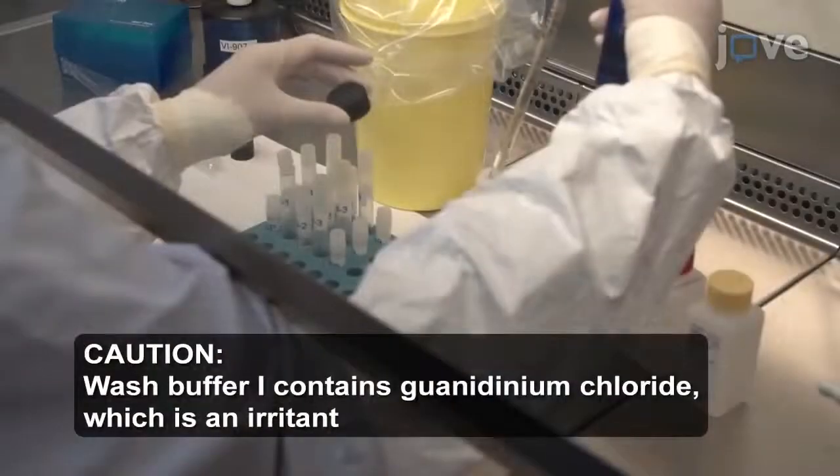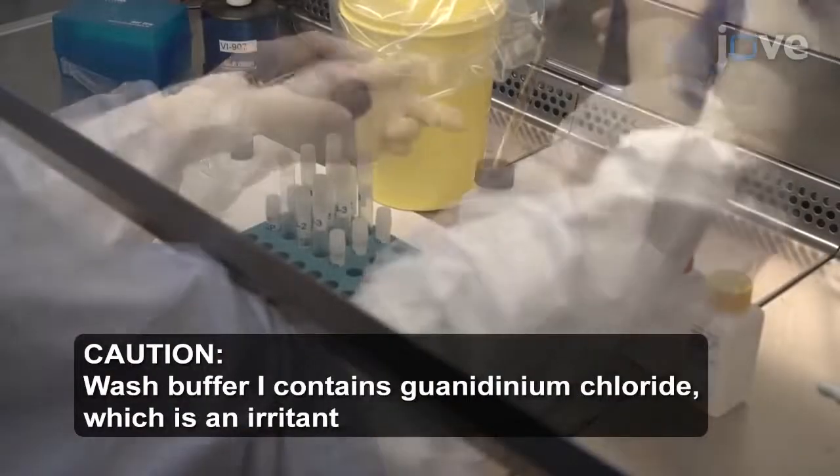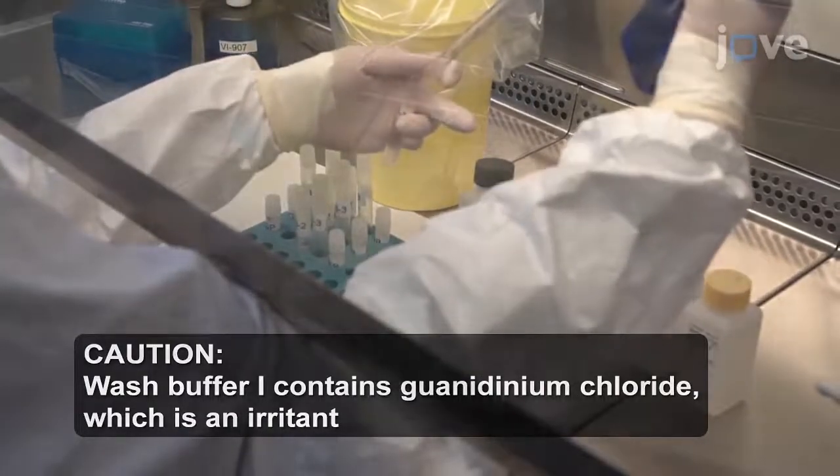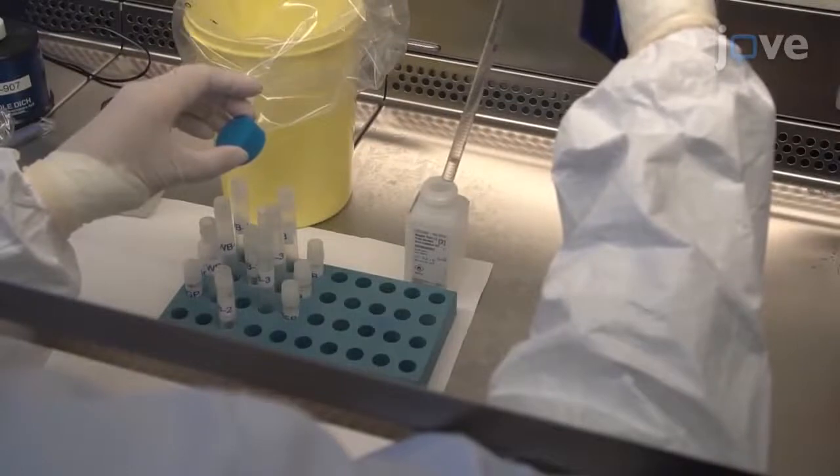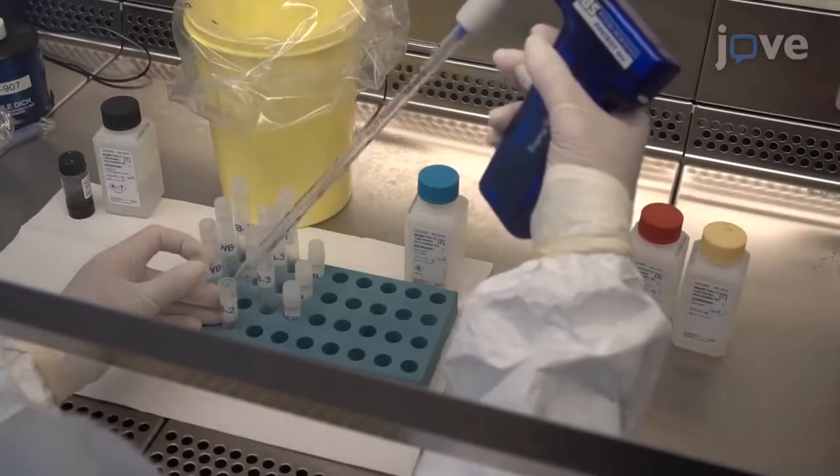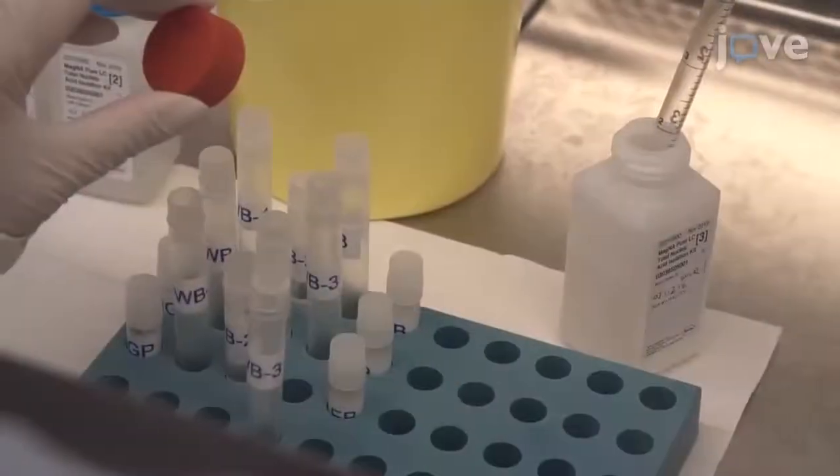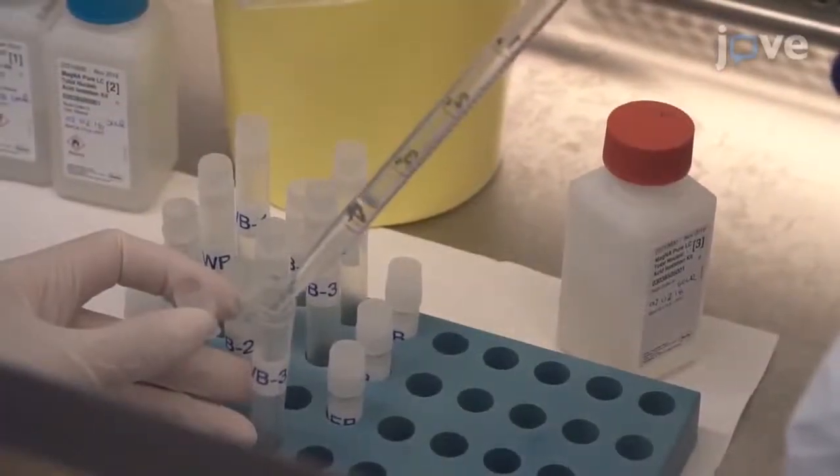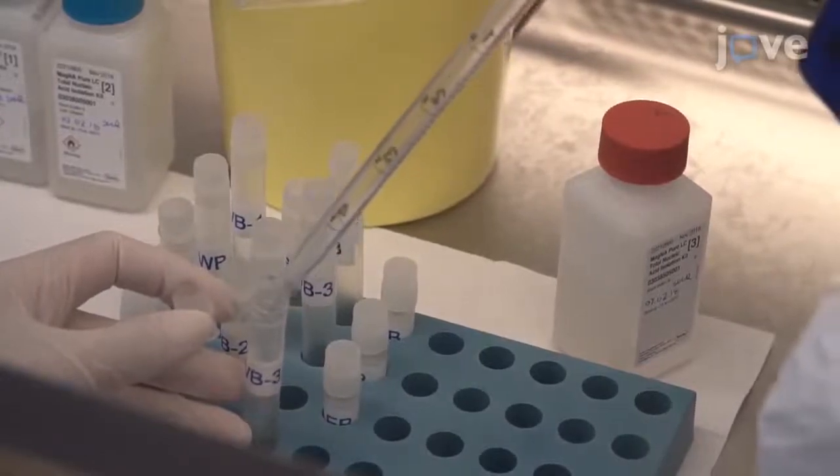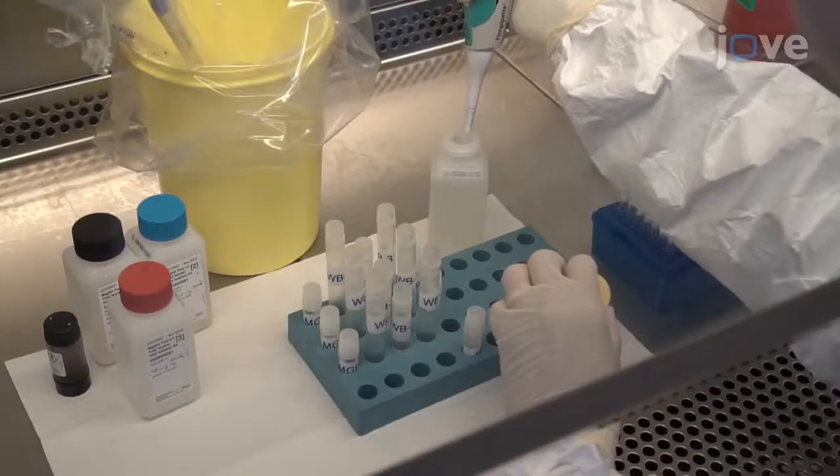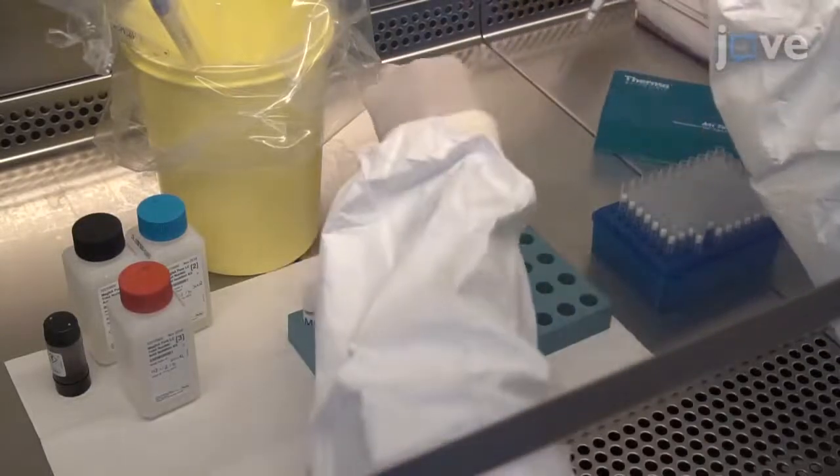Next, pipet 4 milliliters of wash buffer 1 into a 4.5-milliliter tube labeled WB1, 1.5 milliliters of wash buffer 2 into a 3.6-milliliter tube labeled WB2, and 3 milliliters of wash buffer 3 into a 4.5-milliliter tube labeled WB3. Finally, add 100 microliters of elution buffer to a 1.8-milliliter tube labeled EB, and leave the tubes at room temperature until use.